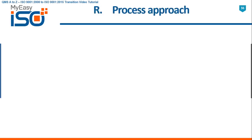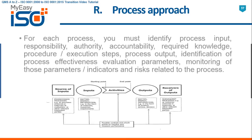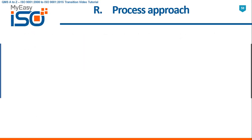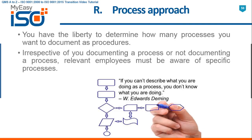R — Process Approach. Ensure you implement process approach effectively. In ISO 9001 2015 QMS, process-based management gets more prominence with the identification of processes in the organization. For each process, you must identify process input, responsibility, authority, accountability, required knowledge, procedure, execution steps, process output, identification of process effectiveness evaluation parameters, monitoring of those parameters, indicators, and risks related to the process. You have the liberty to determine how many processes you want to document as procedures. Irrespective of whether you document a process or not, relevant employees must be aware of specific processes. There is a greater emphasis on the achievement of the desired outcome for enhanced customer satisfaction.